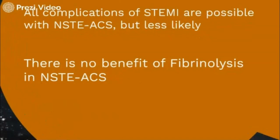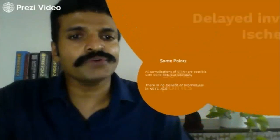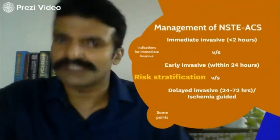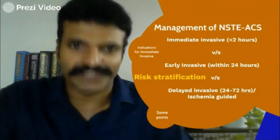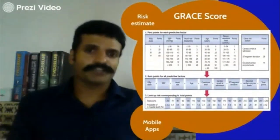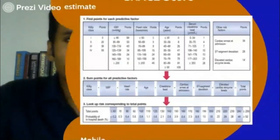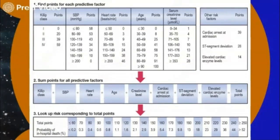For risk stratification, there are many scores available. Most clinicians prefer to use the GRACE score. The GRACE score incorporates heart failure, blood pressure, heart rate, age, any other cardiac complications, and serum creatinine. We have different scores for each of these parameters, and a total score that allows us to classify patients into different risk groups.